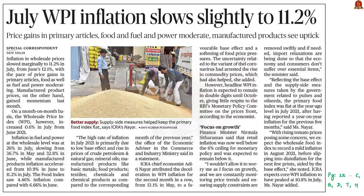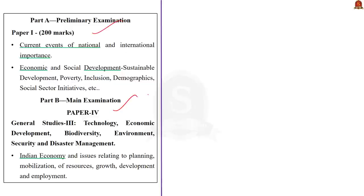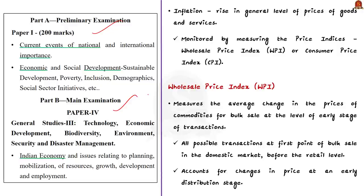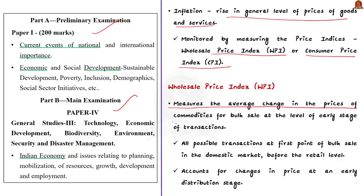Look at this news article. It mentions that WPI inflation has slowed down slightly. To understand this, let us have a brief about WPI first. Inflation is nothing but the rise in the general level of prices of goods and services. It is monitored by measuring price indices such as the Wholesale Price Index (WPI) or Consumer Price Index (CPI). The WPI measures the average change in the price of commodities for bulk sale at the level of every stage of transactions — it simply captures all bulk transactions of goods carried out in the domestic market.